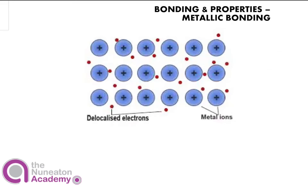How is metallic bonding different to covalent and ionic bonding? Covalent bonding, as you may remember from previous videos, is when you have two non-metals bonding together and sharing electrons to get a full outer shell.